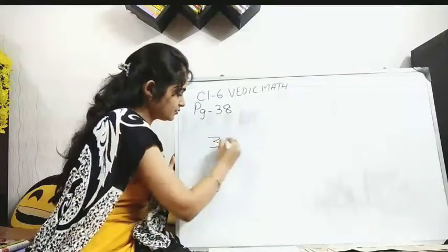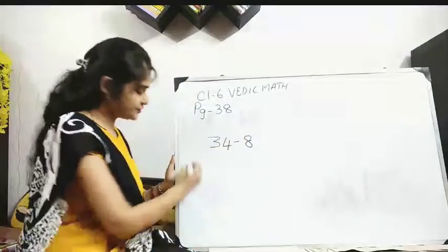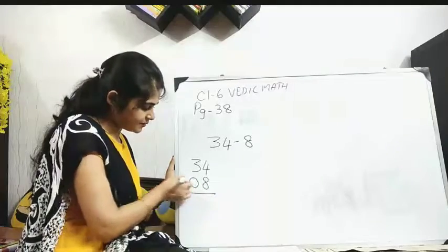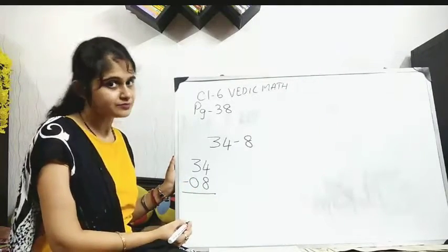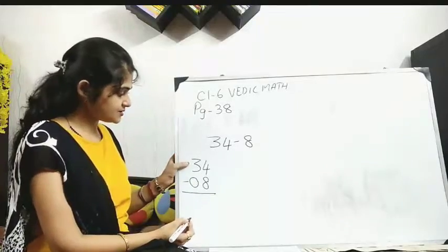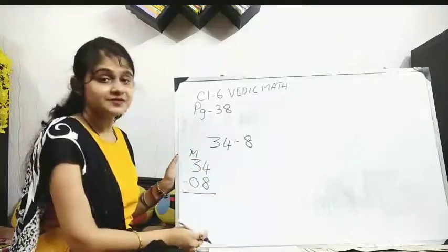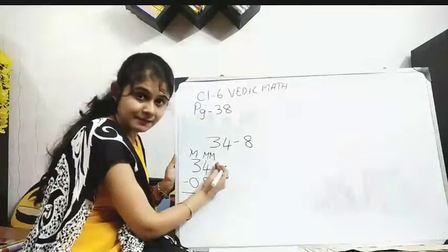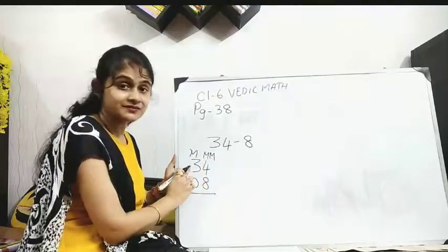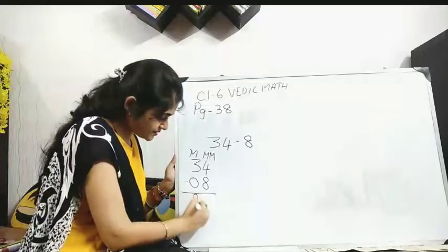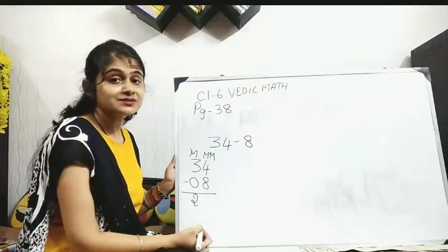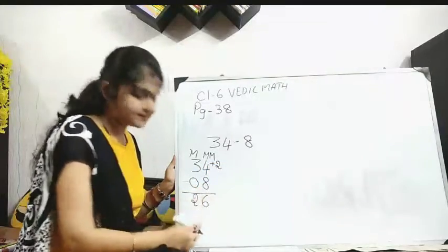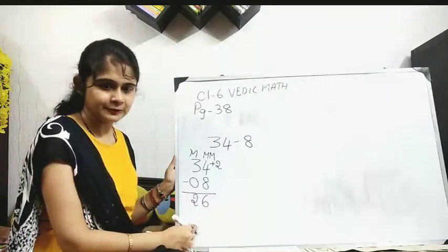34 minus 8. So you write it in this pattern first. Then single digit, so you prefix 0. Done? Now check match, mismatch. This is match because this is greater. This is mismatch because the lower number is greater. Now since my second part is mismatch, so my previous one will be reduced to one number. That means it will be 2. 8's complement is what? 2. 4 plus 2, it will become 6. Your answer is 26. Clear? Next one.